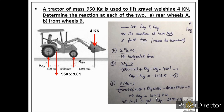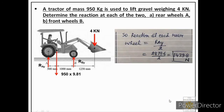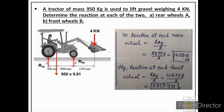Substituting RBY into equation 1 gives RAY = 2879.6 N. These values are for both wheels at each axle. Since the question asks for each of the two wheels, we divide RBY by 2 to get the reaction at each front wheel, and RAY by 2 for each rear wheel. Thank you very much.